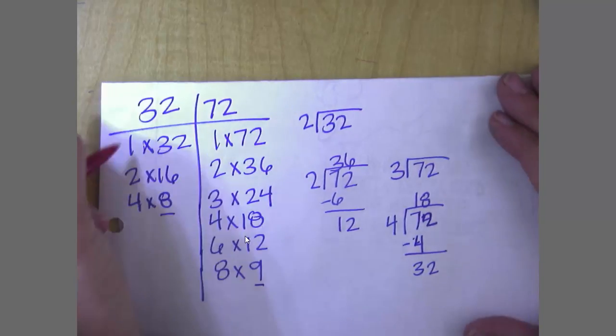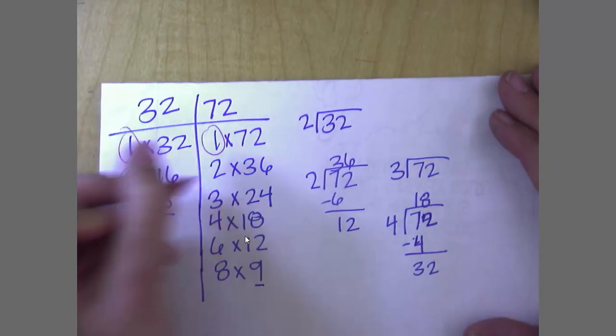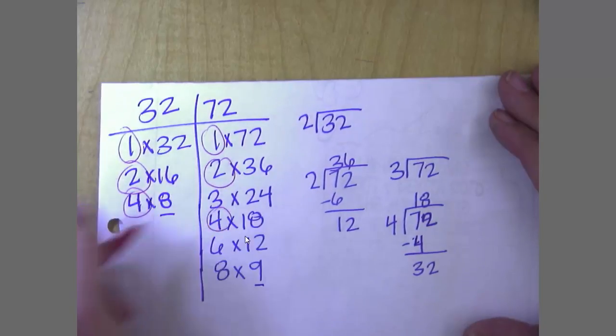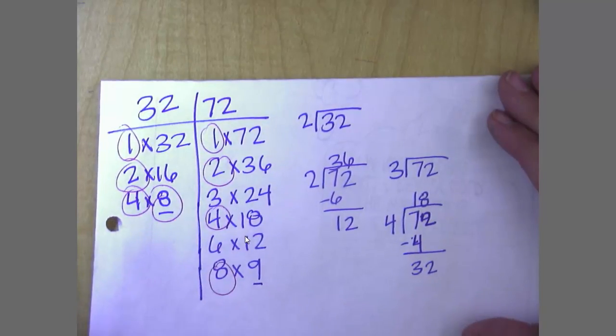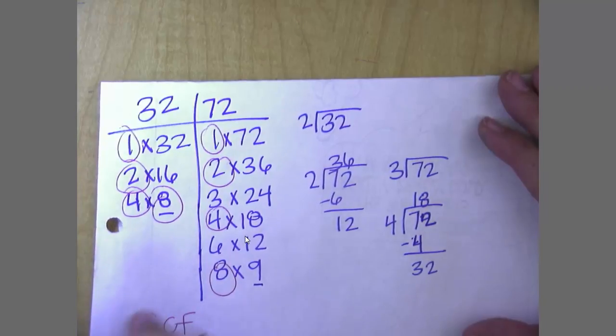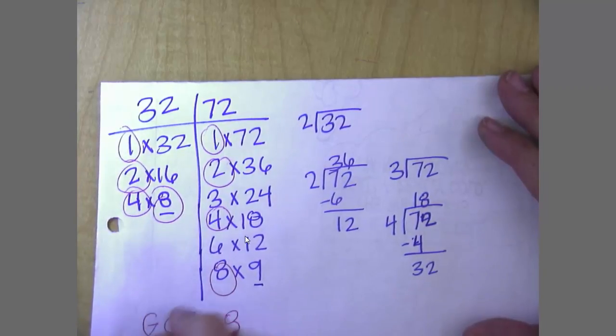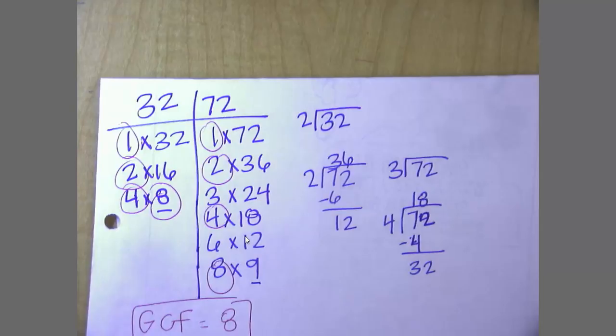And I have 1's in common, 2's, 4's, 8's. And that's it. So my greatest common factor for this one is going to be 8. Greatest common factor is going to be 8.